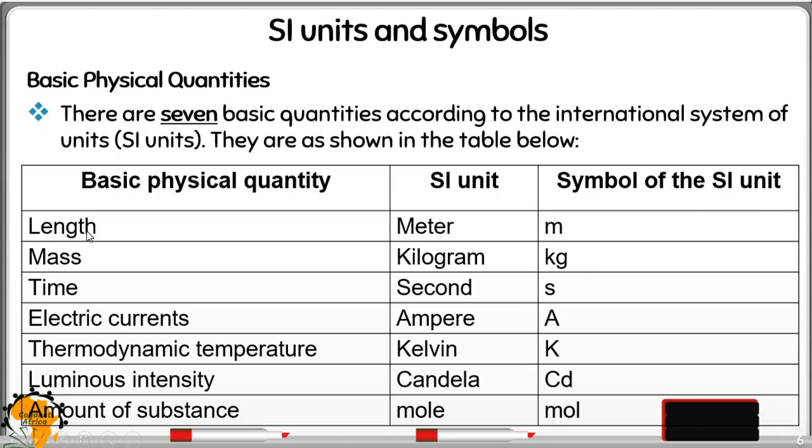For instance, we have length. The SI unit is meter, and the symbol is small m. So these are the seven basic physical quantities, or fundamental quantities.